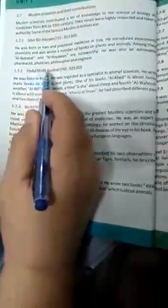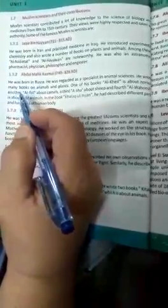The next scientist is Abdul-Malk Asmay. He was born in Basra. He was regarded as a specialist in animal sciences. He studied the body structure of different animals and wrote many books on different animals.